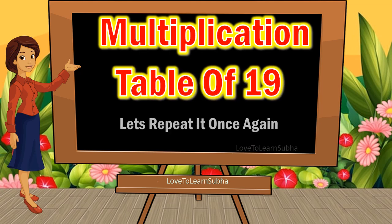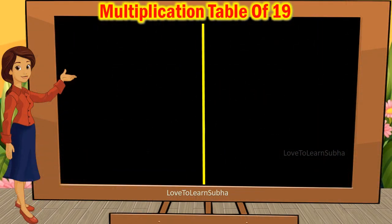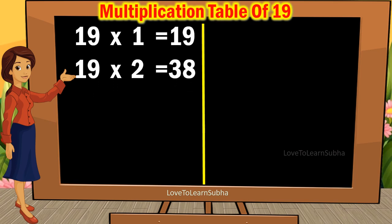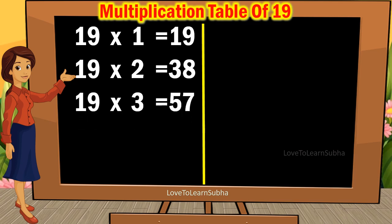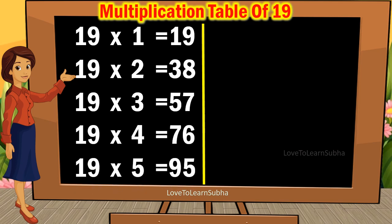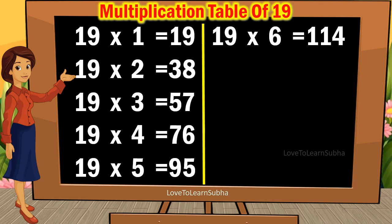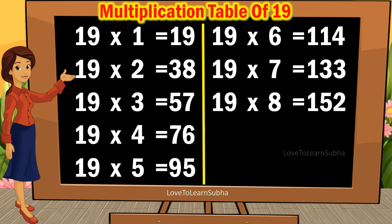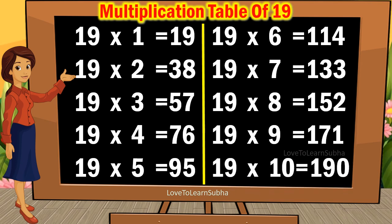Now, let's repeat it once again. Nineteen ones are 19. Nineteen twos are 38. Nineteen threes are 57. Nineteen fours are 76. Nineteen eights are 152. Nineteen nines are 171. Nineteen tens are 190.